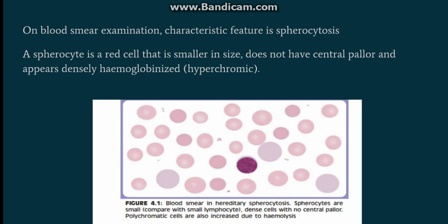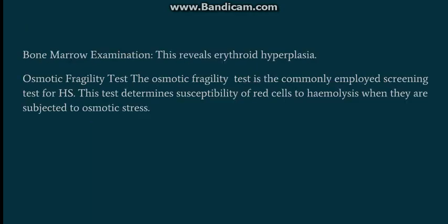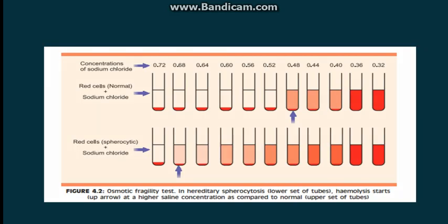A spherocyte is a red blood cell that is smaller in size, does not have a central pallor, and is hyperchromic. Here we can see a spherocyte and compare it with a small lymphocyte, since a small lymphocyte has an equivalent size to a normal red blood cell. The spherocyte has no central pallor and is hyperchromic — this is the characteristic appearance. Bone marrow examination can also be done, which shows erythroid hyperplasia. The osmotic fragility test is the commonly employed screening test for hereditary spherocytosis because spherocytic red blood cells are osmotically fragile — they lyse at a higher concentration of saline, while normal red blood cells lyse at a lower concentration.